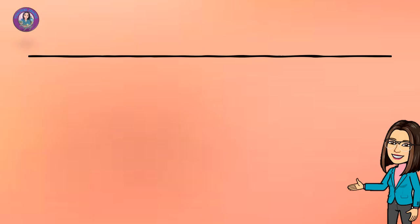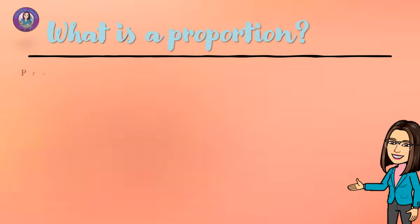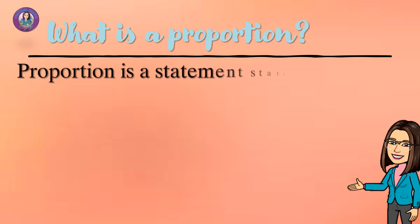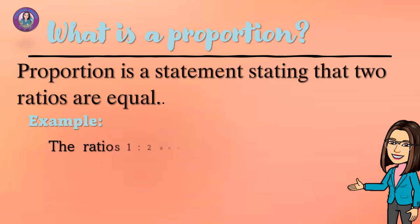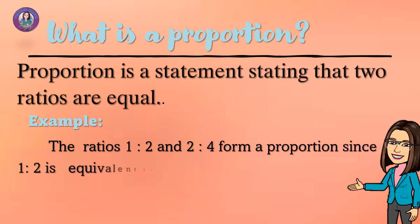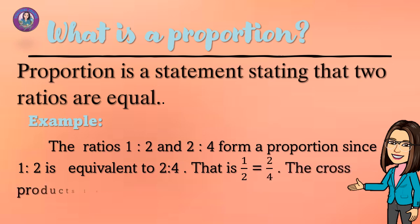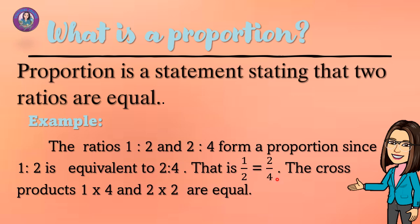As a review, what is a Proportion? Proportion is a statement stating that two ratios are equal. For example, the ratios 1 to 2 and 2 to 4 form a proportion since 1 to 2 is equivalent to 2 to 4. That is, 1 to 2 equals 2 to 4 in fraction form. The cross products of 1 times 4 and 2 times 2 are equal.